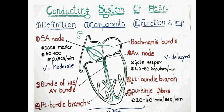Now let's start the quick revision of the conducting system. We have the SA node, also called the sinoatrial node — it is the place where depolarization starts. From here, depolarization spreads to the two atria, and from the two atria it spreads to the ventricles through the AV node, which is the only connection between the atria and ventricles. From here comes the bundle of His, which divides into right and left bundle branches, and these give rise to Purkinje fibers.